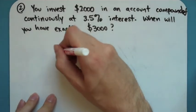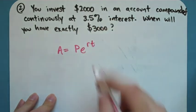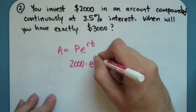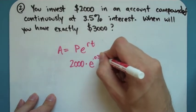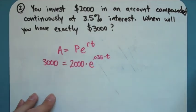So my formula for that, if you had forgotten, was A equals Pe to the rt power. I start out with $2,000. Then I have my e to my .035. I don't know t, but I do know my answer is supposed to be 3,000.